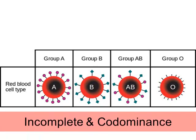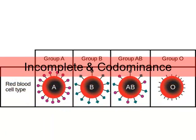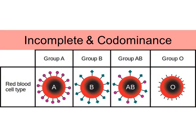The topic of this video is going to be the genetic inheritance patterns known as incomplete dominance and codominance. We're going to do two patterns at once. The two patterns have some features in common with one another but also some key differences. So let's go ahead and get started.